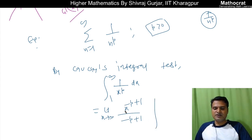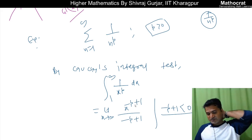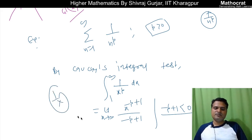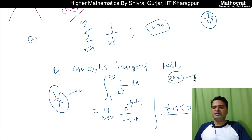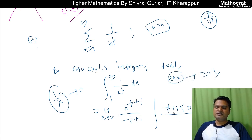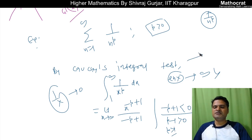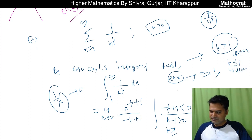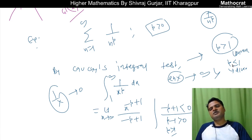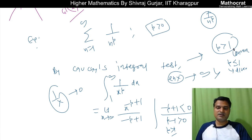When the exponent 1 minus p plus 1 equals 0, i.e., p equals 1, we get ln x evaluated from 1 to infinity, which diverges. When p minus 1 is greater than 0, i.e., p is greater than 1, the integral converges. So by Cauchy's Integral Test: p greater than 1 means convergent, p less than or equal to 1 means divergent.